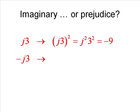Let's try another one: negative j3. Let's square that. The square of negative j3 would be j squared times the square of negative three, which is of course minus one times positive nine — that is negative nine. Ergo, negative j3 is also an imaginary number according to this convention.